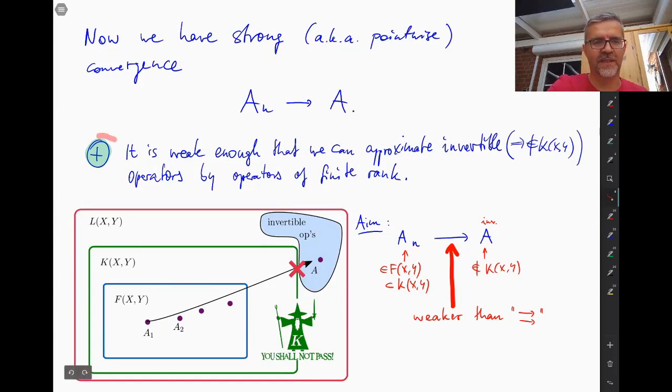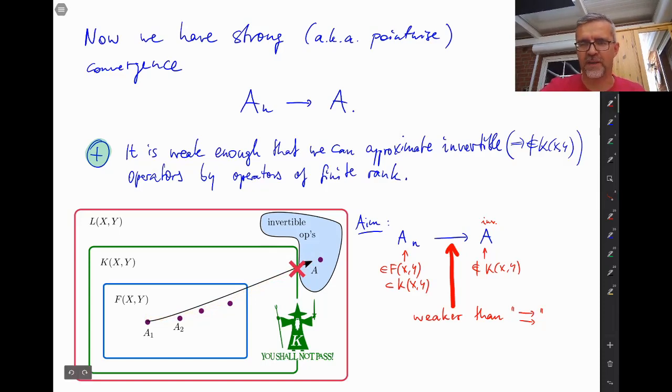Okay, and the good news is that using strong convergence, which is a lot weaker than uniform convergence, we can pass through this barrier here. Okay, so this was our aim and we can tick this box.